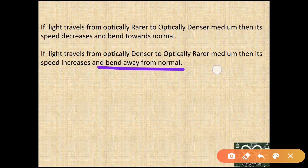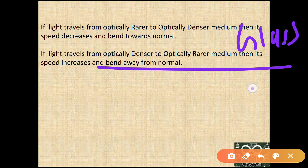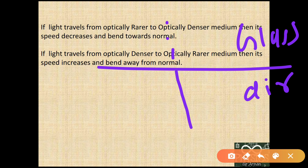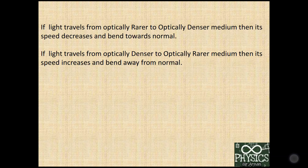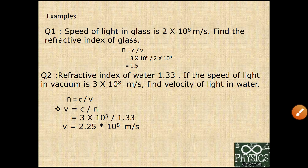Similarly, if you have glass on one side and air on the other, the normal is the reference line. When light passes from denser to rarer, it bends away from the normal. So the actual direction and the refracted direction differ in this way.